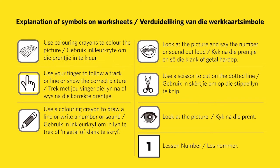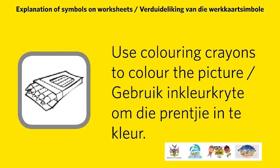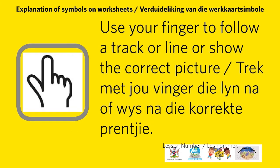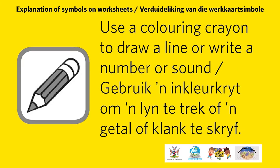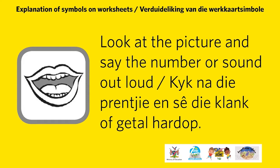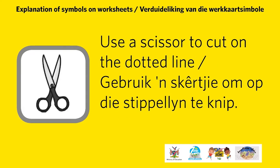Explanation of symbols on worksheets are as follows. Use coloring crayons to color the picture. Use your finger to follow the track or line or show the correct picture. Use a coloring crayon to draw a line or write a number or sound. Look at the picture and say the number or sound out loud. Use scissors to cut on the dotted line.